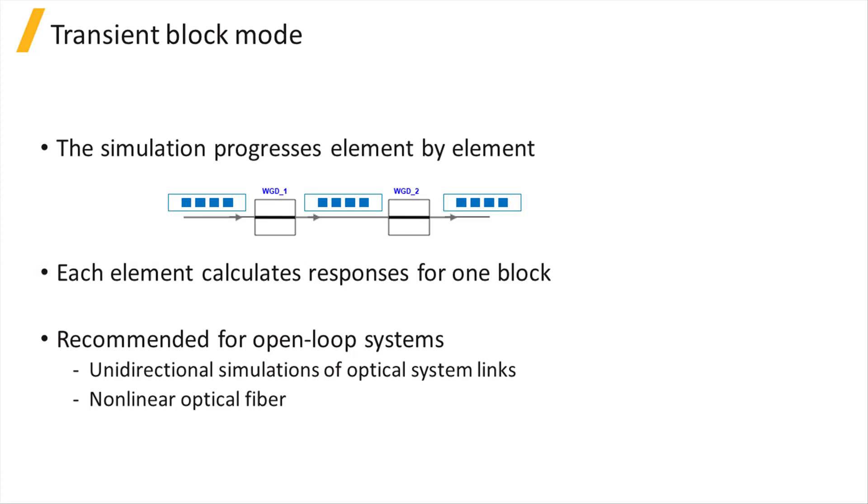Transient block mode is recommended for open-loop systems, such as unidirectional simulations of optical system links, where the simulation progresses unidirectionally from the transmitter to the receiver. Running the transient simulation in block mode is required when optical fiber nonlinear dispersive effects must be considered, but the propagation time delay isn't of interest.